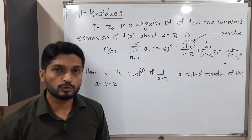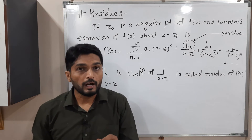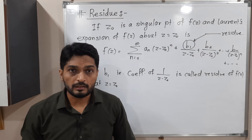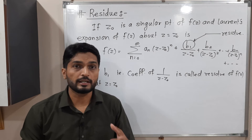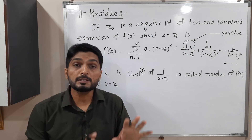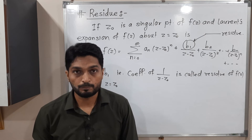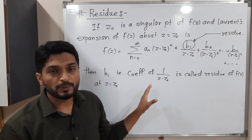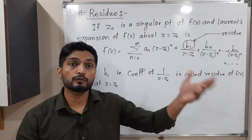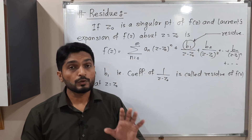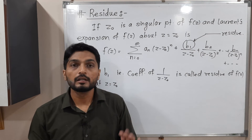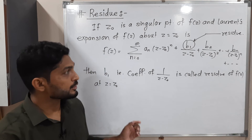Now, z naught is a singularity, and various types of singularities exist: pole, isolated essential singularity, removable singularity, and more. But if the given singularity is a pole, there are special formulae to calculate the residue. Using the definition is very heavy — first finding the Laurent series expansion and then extracting the coefficient — so if it is a pole, we have very simple formulae.